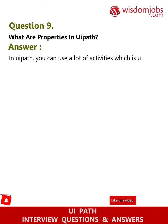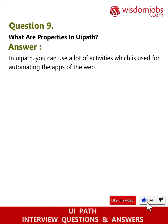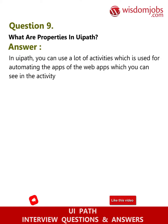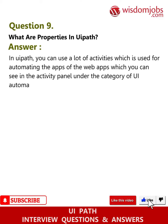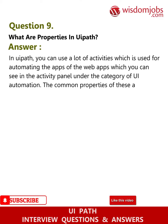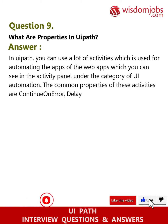Question nine: What are properties in UiPath? Answer: In UiPath, you can use many activities for automating web apps, visible in the activity panel under the UI Automation category. The common properties of these activities are: Continue on Error, Delay After, Delay Before, Timeout MS, Wait for Ready, and Target.